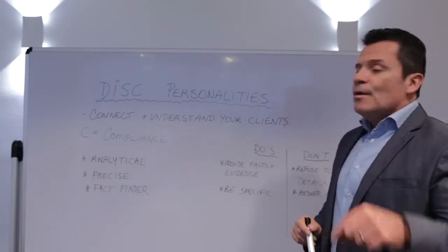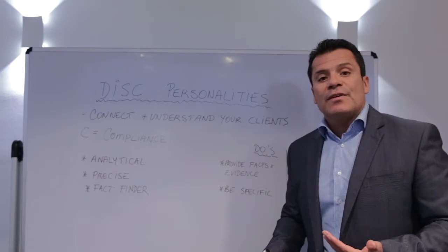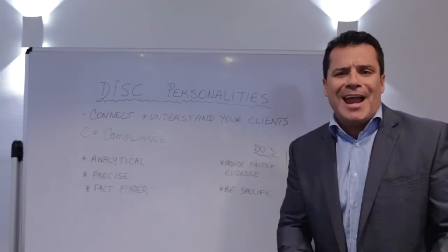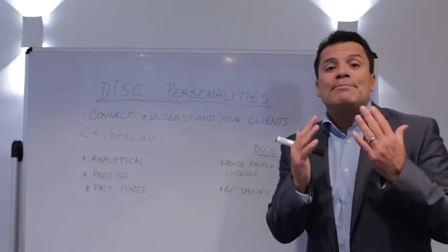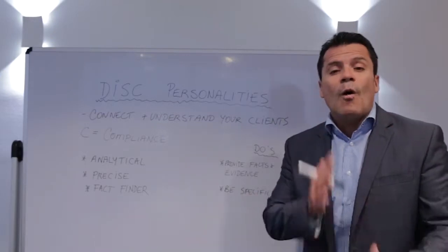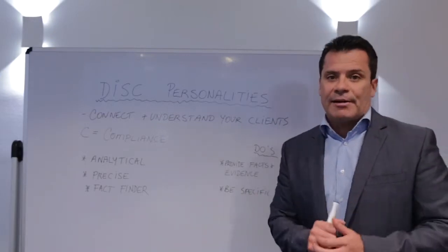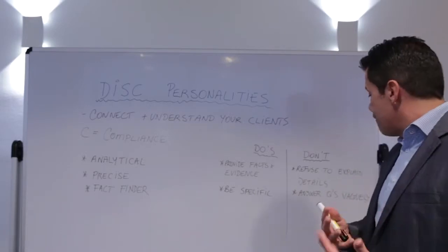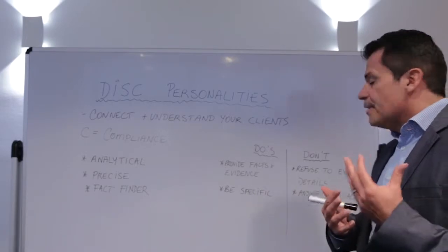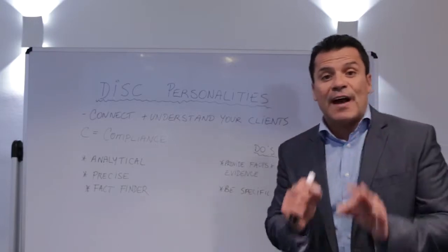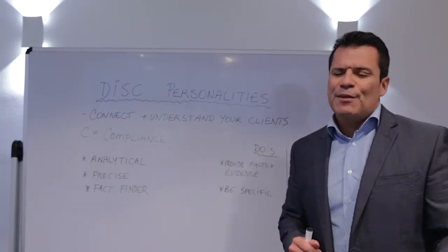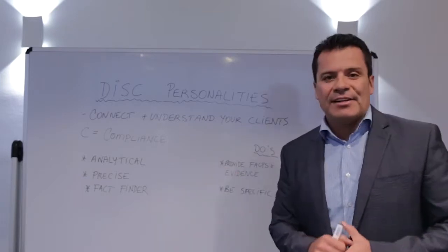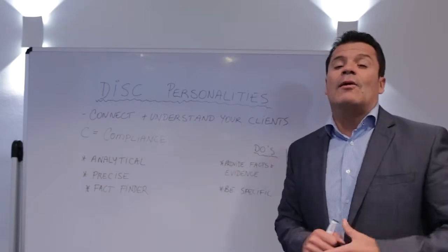Alright, so let's think about some of the do's and don'ts with this type of character. Firstly, provide facts and evidence as much as you can. The other one is be specific — always think about being specific with this type of character. The don'ts: don't refuse to explain details, and finally, don't answer questions vaguely or casually. If you want to connect more, start going with the do's, understand their character and you will win a lot more business.